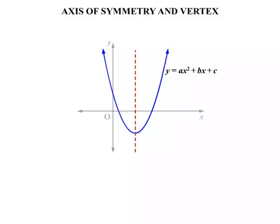y equals ax squared plus bx plus c is the general form of the parabola there. Now if we just focus on that, straight down the middle there, that's known as the axis of symmetry. So perfectly symmetrical about that line.